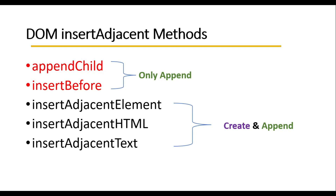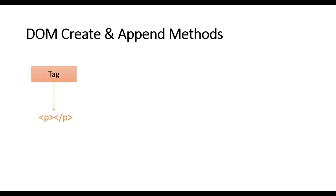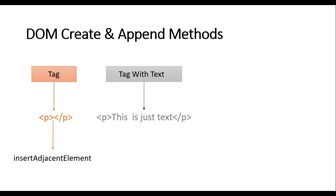Let's learn more about these three methods before jumping to the practice section. If I want to create a p element, I would use insertAdjacentElement. If I want to create a p element and add text inside it at the same time in one line, I need to use insertAdjacentHTML. And if I want to create or print simple text, I use insertAdjacentText.